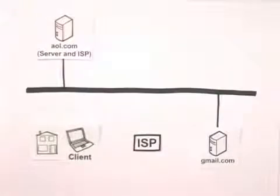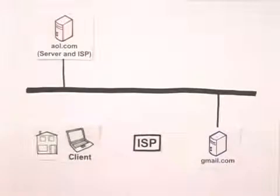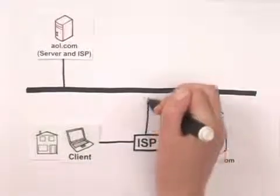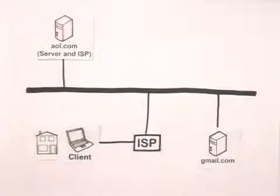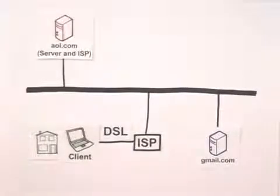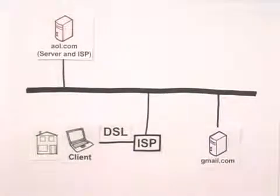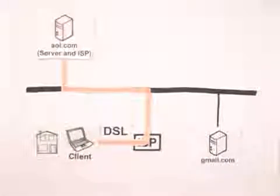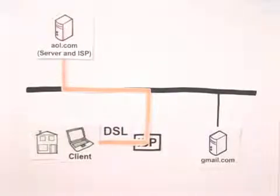So, this is how it works. Your computer at home is not a server because it's not connected directly to the Internet. Computers you and I use every day are called clients because they're connected indirectly to the Internet through an Internet service provider. Here we'll pretend that this is my home laptop and I'm using DSL. Now let's pretend that I want to visit AOL.com, which is coincidentally both a server and an ISP. I hop onto my laptop with DSL, go through my ISP, onto the Internet, and look at AOL.com. My computer connects with AOL.com and I can look at its web pages.